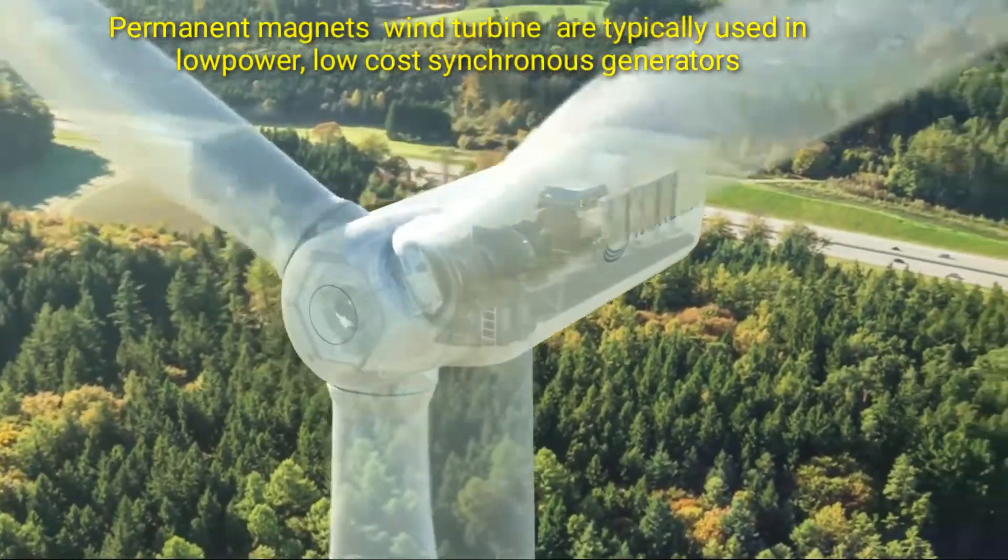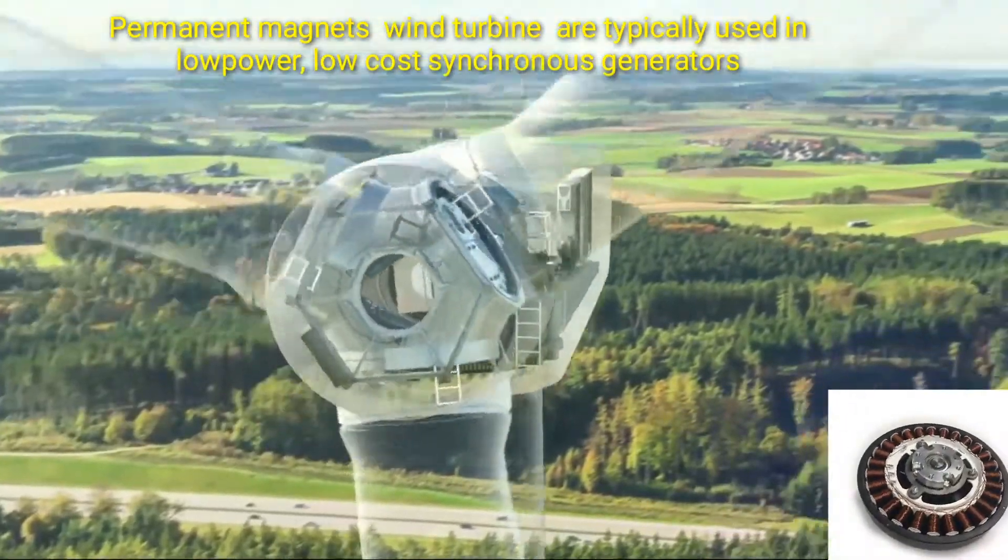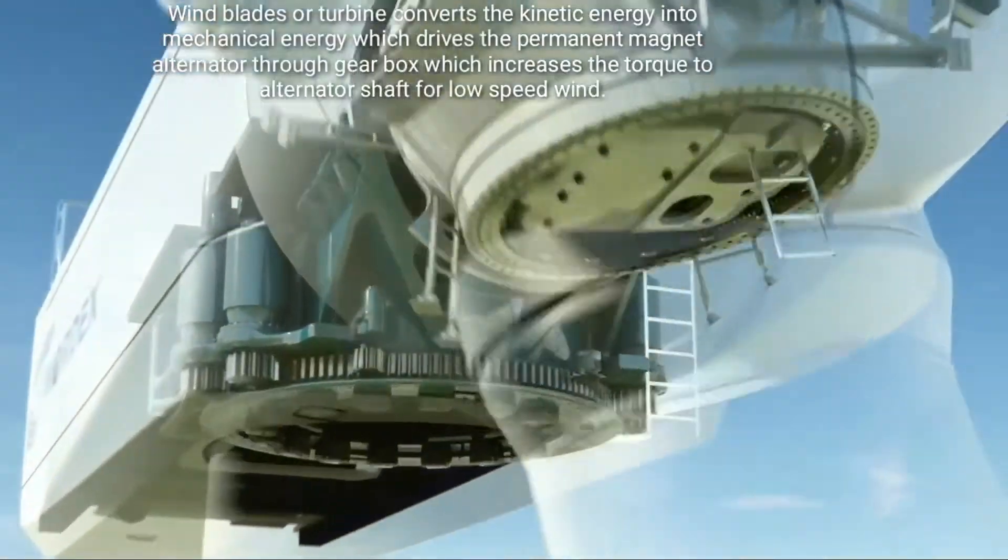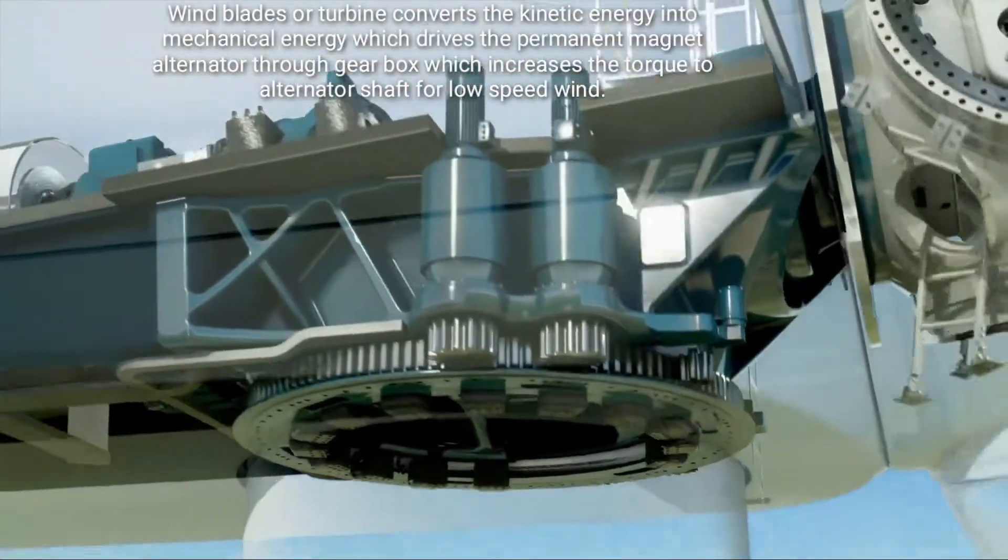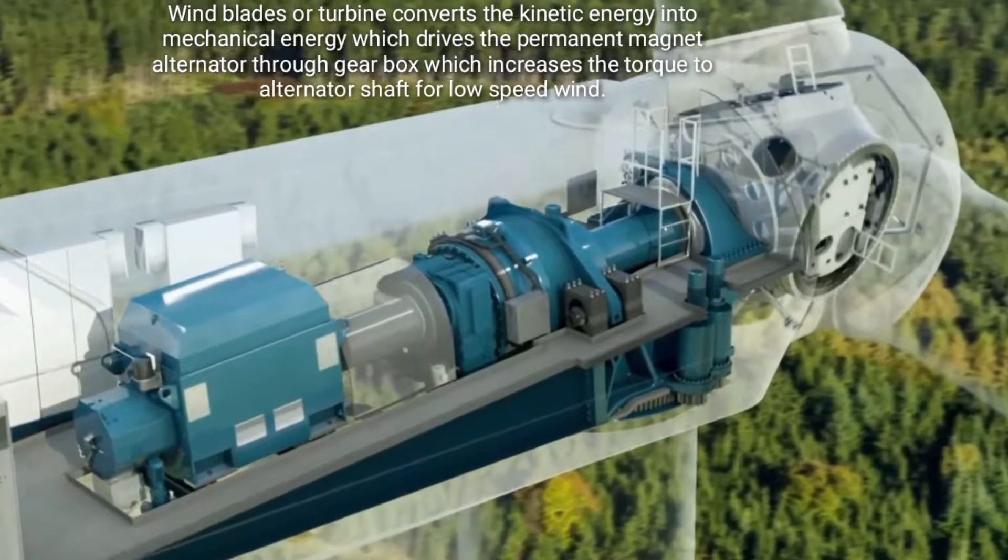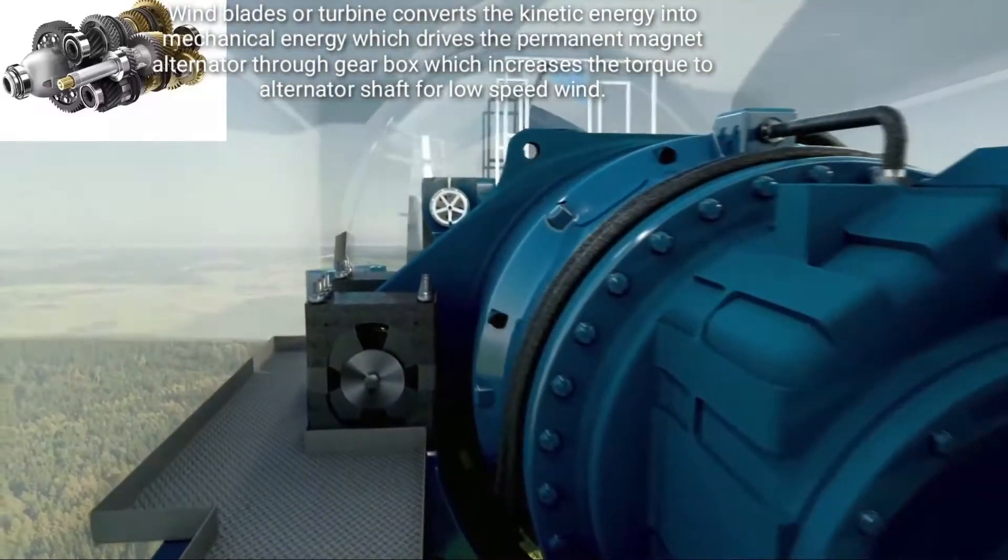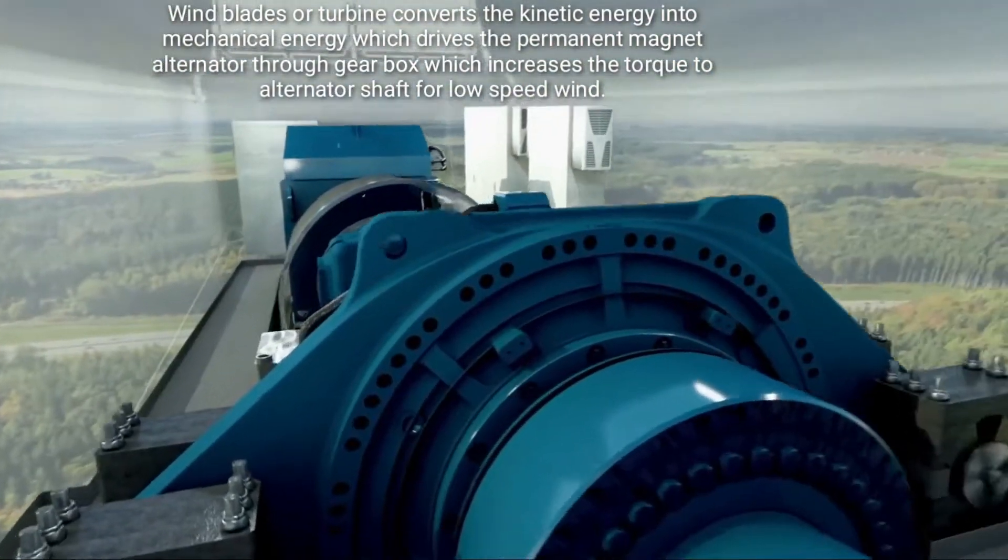Permanent magnet wind turbines are typically used at low power, low cost synchronous generators. Wind blades or turbines convert the kinetic energy into mechanical energy which drives the permanent magnet alternator through a gearbox which increases the torque to the alternator shaft for low speed wind.